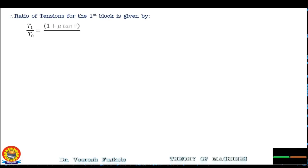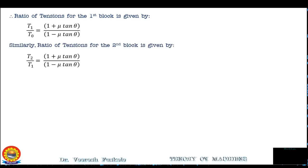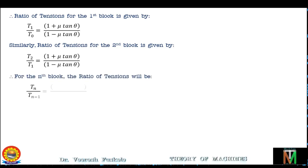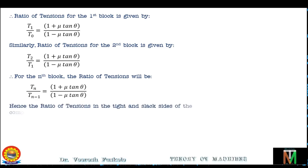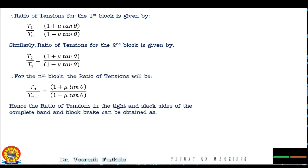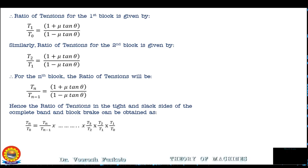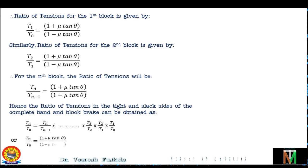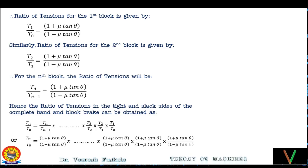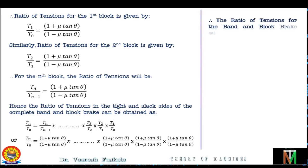Similarly, the ratio of tensions for the second block is T2/T1 = (1 + μ·tanθ) / (1 − μ·tanθ), and for the nth block: Tn/T(n−1) = (1 + μ·tanθ) / (1 − μ·tanθ). Hence the overall ratio Tn/T0 is obtained by multiplying all intermediate ratios: Tn/T0 = (Tn/T(n−1)) × ... × (T2/T1) × (T1/T0) = [(1 + μ·tanθ) / (1 − μ·tanθ)]^n. This gives the ratio of tensions for the band and block brake with n blocks.